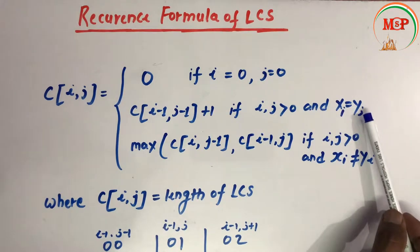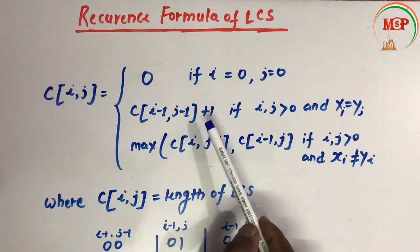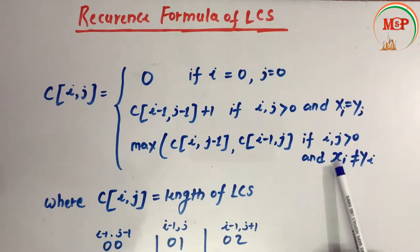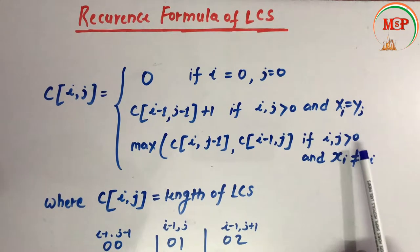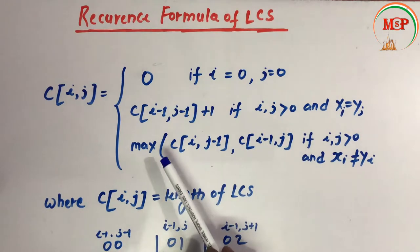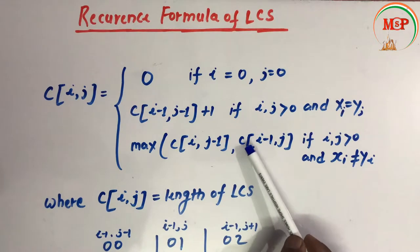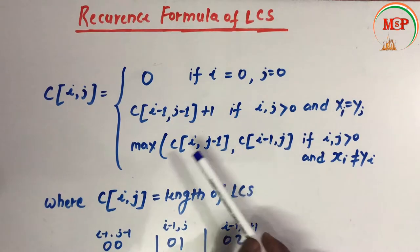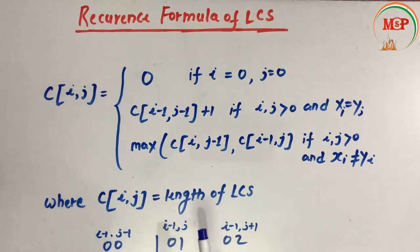If i and j are greater than 0 and x[i] is equal to y[j], then we put c[i-1][j-1] plus 1. Otherwise, if x[i] is not equal to y[j] and i and j are greater than 0, then we put the maximum of c[i][j-1] and c[i-1][j] — whichever is maximum we choose. Here c[i][j] equals the length of the LCS.